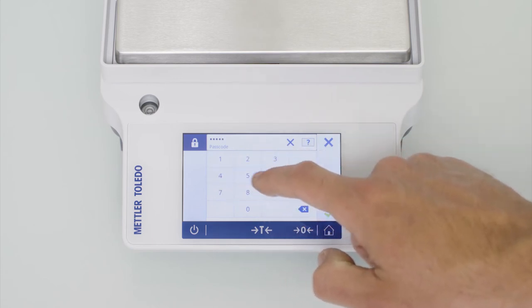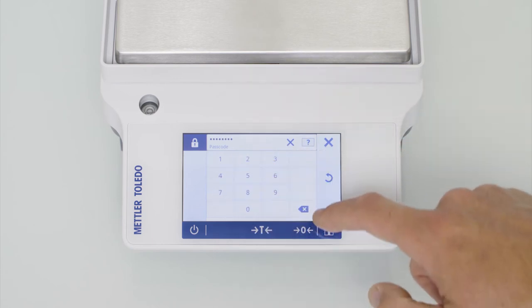The MET stands for built-in ease and security with sample IDs and passcode protection. Enter a code before changing the settings of the balance to make sure settings are not changed by unauthorized personnel.